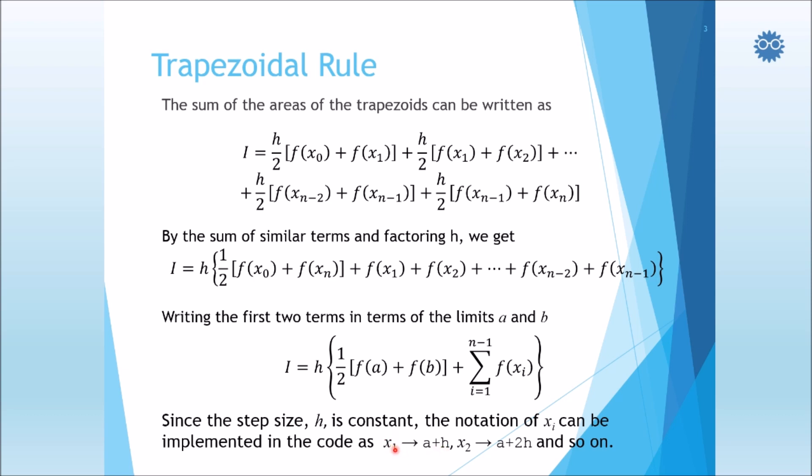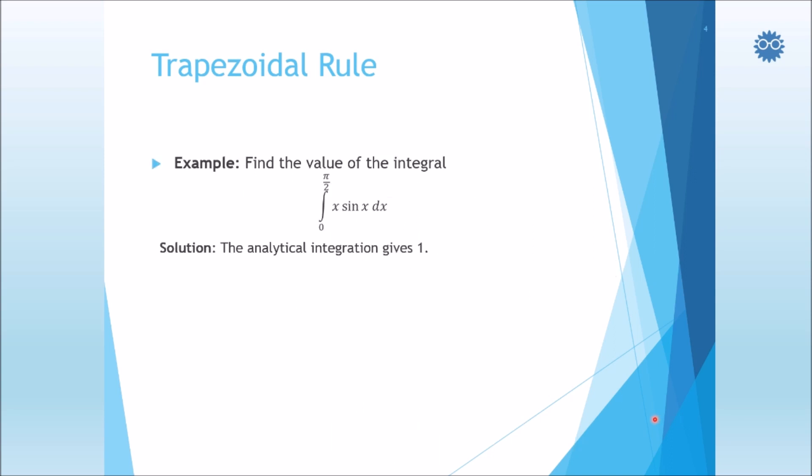For example, x sub 1 can be expressed by a plus h. The integration point 2, or x sub 2, can be expressed by a plus 2h. Now we notice some relation between the factor multiplied by h and the subscript, so this will be very helpful for us in coding this method.